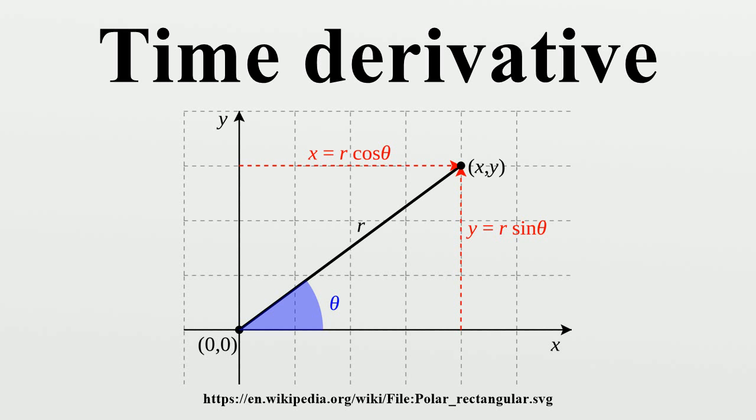Example: Circular motion. Consider a particle moving in a circular path. Its position is given by the displacement vector, related to the angle theta and radial distance r.